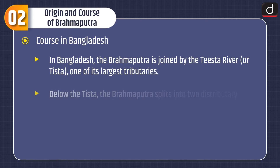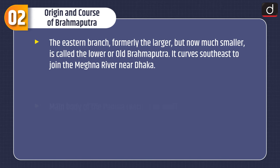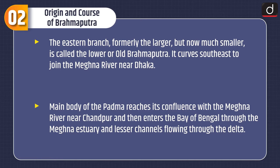Course in Bangladesh: the Brahmaputra is joined by the Tista river, one of its largest tributaries. Below the Tista, the Brahmaputra splits into two distributary branches. The western branch, containing the majority of the river's flow, continues south as the Jamuna to merge with the lower Ganga at Golundo Ghat, called the Padma river. The eastern branch, formerly larger but now much smaller, is called the Old Brahmaputra; it curves southeast to join the Meghna river near Dhaka. The main body of the Padma reaches its confluence with the Meghna near Chandpur and then enters the Bay of Bengal through the Meghna estuary and lesser channels flowing through the delta.